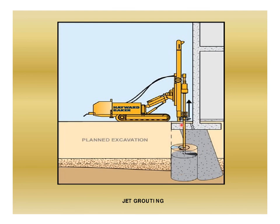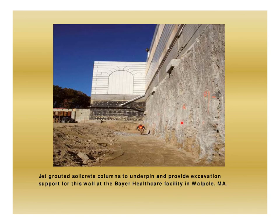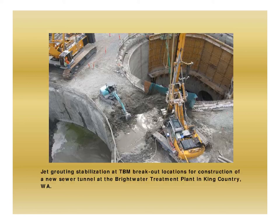The process of jet grouting proceeds from bottom to top. Examples include jet grouted soil-crete columns used to underpin and provide excavation support for the wall at a healthcare facility, and jet grouting stabilization at a TBM breakout location for construction of a new sewer tunnel at a water treatment plant.